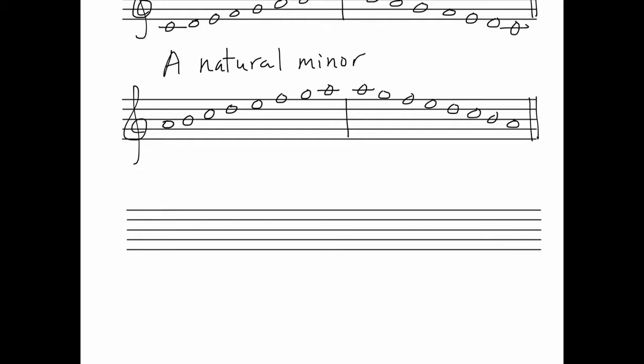Next, let's write A harmonic minor. And again, we'll stay in the treble clef. Now you'll recall that the only difference between A natural minor and A harmonic minor is the seventh note, which we have to raise from G to G sharp.